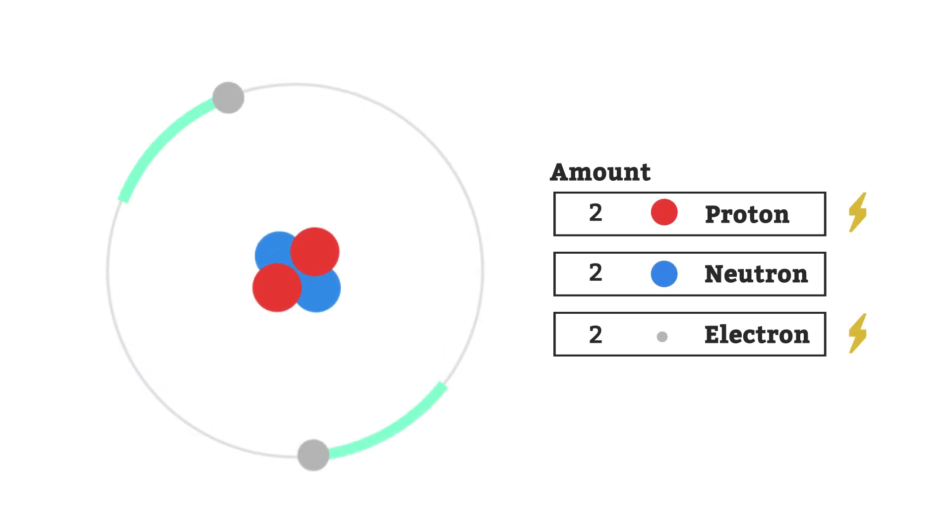Protons have a positive charge, plus one, and electrons have a negative charge, minus one.